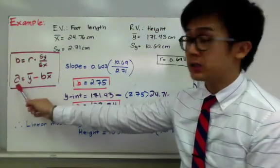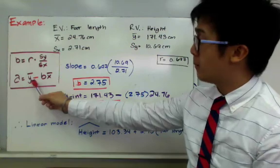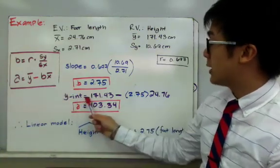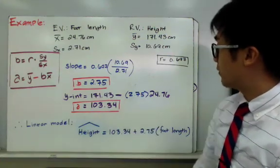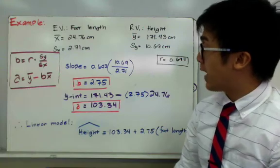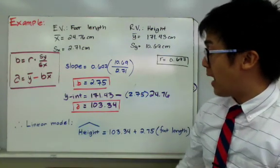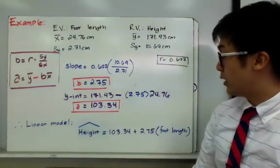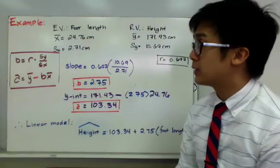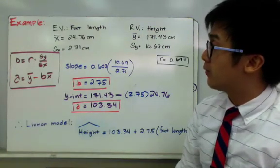Now we can find the y-intercept using the value of our slope. The y-intercept equals the mean of the response variable minus b times the mean of the explanatory variable, which is 171.43 minus 2.75 times 24.76. This gives us a y-intercept of 103.34. Now that we have both values, our predicted height equals 103.34 plus 2.75 times the foot length in centimeters. This completes the second type of computation for finding the LSRL given the numerical summary.